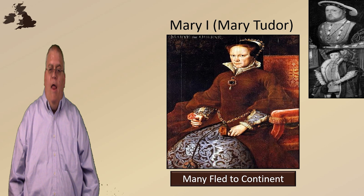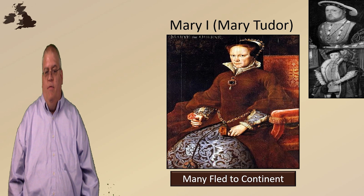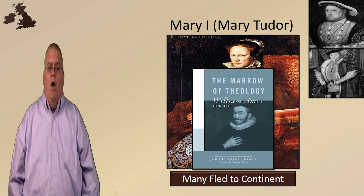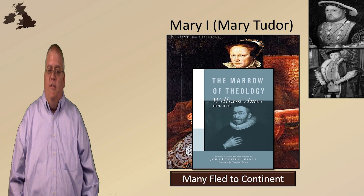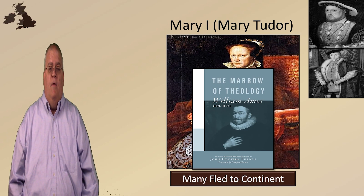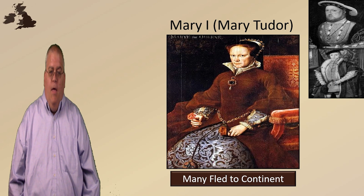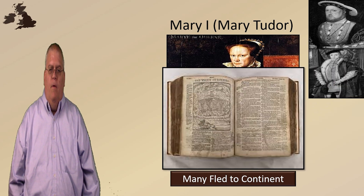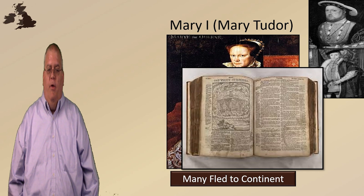Many English Protestants ran away to the continent, especially to Geneva and to the Netherlands, which were staunchly reformed by that time. A man named William Ames, who was an early leader, spent time in the Netherlands, where he taught and wrote a book called The Marrow of Theology. This is basically an English systematic theology similar in purpose to Calvin's Institutes — a systematic discussion of biblical truth. Ames describes theology as 'the doctrine of living for God.' English Protestants on the continent also produced the Geneva Bible, an English translation of the Bible with Protestant notes, which was smuggled into England and became very popular.